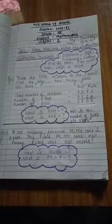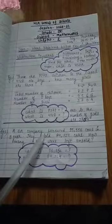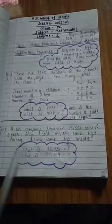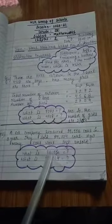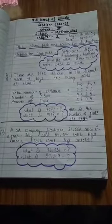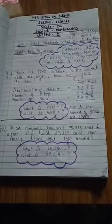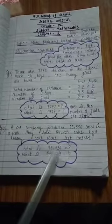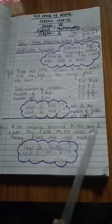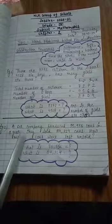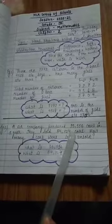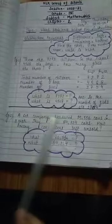So children, to understand the problem well and to know what to write as statements, ask these questions: what is 95,556 and what is 84,324? So let's find children. What is 95,556? These are number of cars produced in a year.